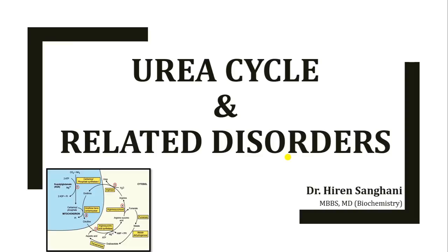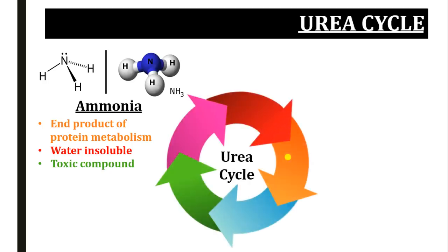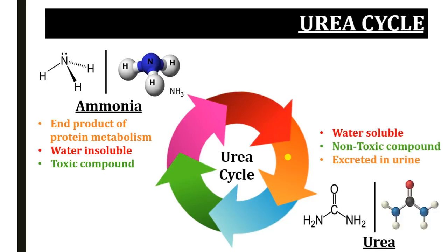The urea cycle takes place in the liver to detoxify ammonia. This ammonia is an end product of protein metabolism. It is a water-insoluble and toxic compound, so it cannot be excreted from the body directly. To remove this ammonia, it undergoes the urea cycle, and at the end we get urea, which is water-soluble and non-toxic and can be easily excreted in urine.